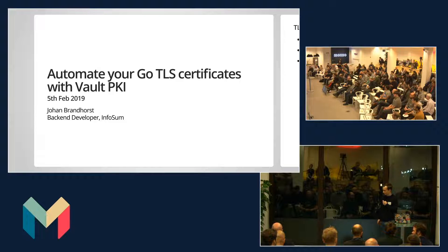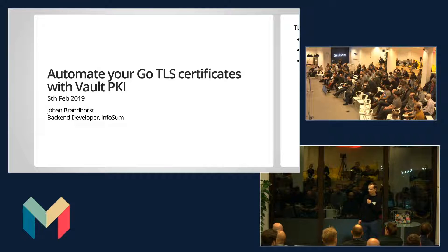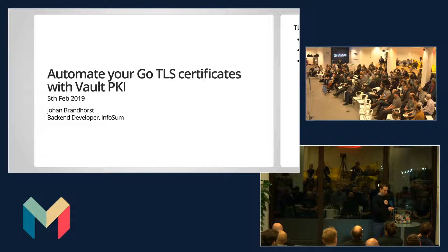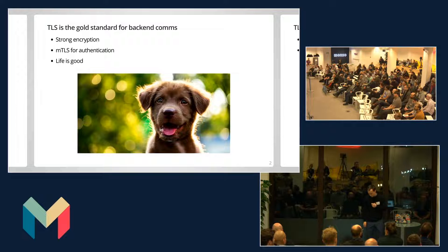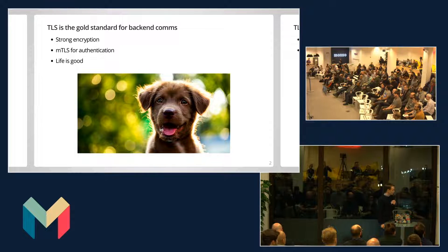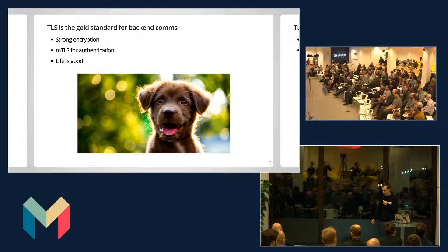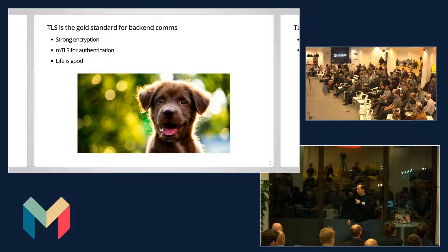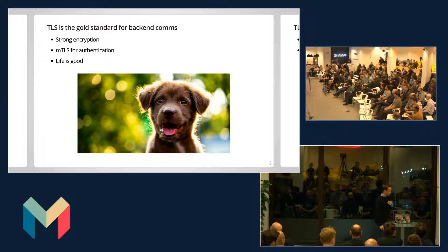I've been using Consul and Vault at work for a while. I thought I'd get involved with the HashiCorp people here, because I'm mostly a Go guy. This is my first non-Go meetup as well. So I'm here today to talk about certificate distribution, which is one of those problems that can be tricky to solve. But first, let's take a step back. TLS is the gold standard for backend communications, providing both strong encryption, and with MTLS you get the trust that you're talking to the right party and the right party is talking to you.